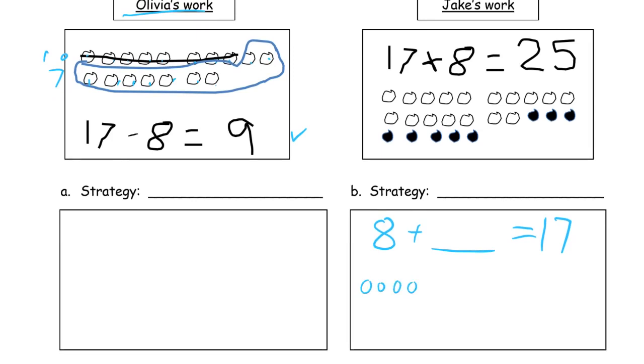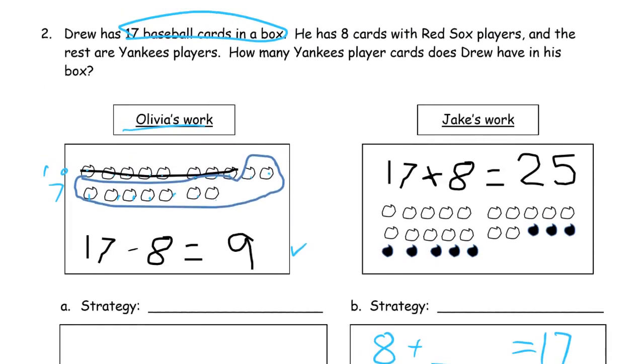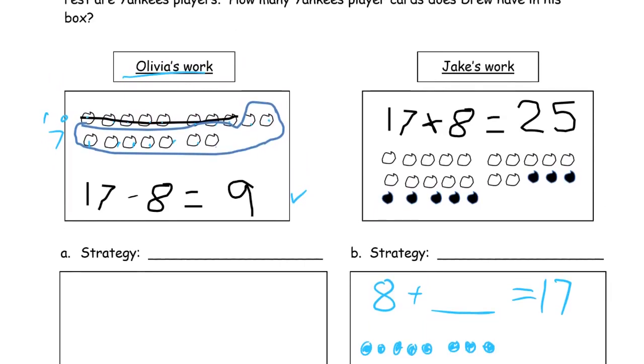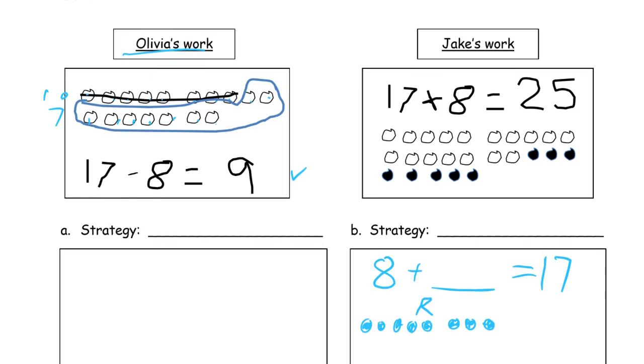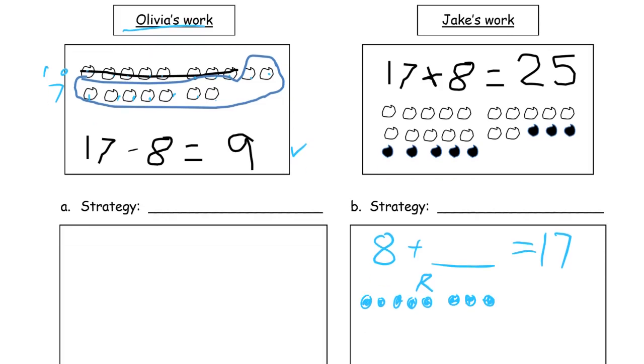So let's fix his strategy here. So if he starts with 8. 1, 2, 3, 4, 5, 6, 7, 8. So this is what, let's label this picture. These are Red Sox players, right? R for Red Sox. And then he needs to add Yankee players. That's 8, 9, 10, 11, 12, 13, 14, 15, 16, 17. These are Yankee players. Y.